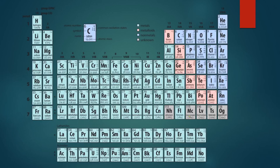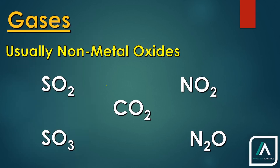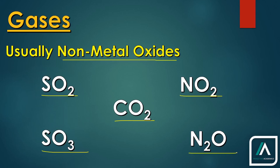But it is not the case that all non-metals are gaseous. If we look at the periodic table, non-metals are on the right side. The gaseous ones include helium, neon, argon, chlorine, oxygen, and nitrogen. And generally, non-metal oxides are also gaseous — sulfur dioxide, sulfur trioxide, carbon dioxide, nitrogen dioxide, and nitrous oxide. Generally speaking, non-metal oxides are gaseous.